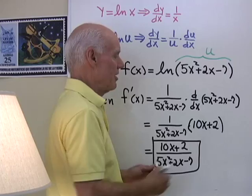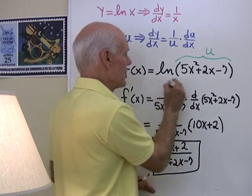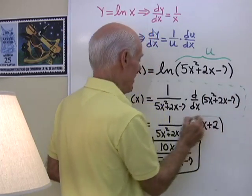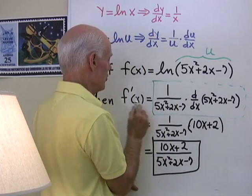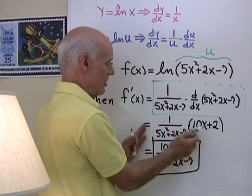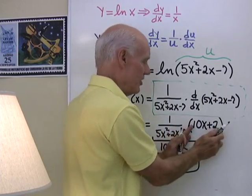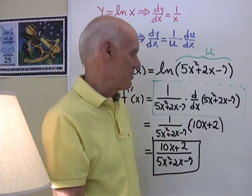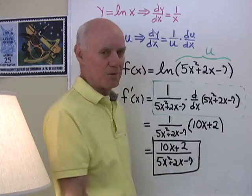Now this step right here, as you get better at this, is a step that you kind of do in your head. You'll just go right from this expression right here to its derivative down here. You go 1 over u and then you'll differentiate u. 10x plus 2, then you might do some simplifying after that.